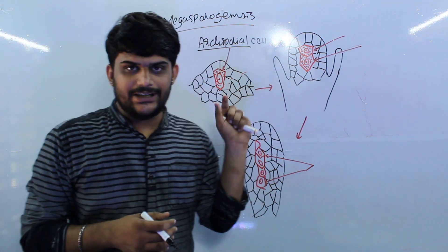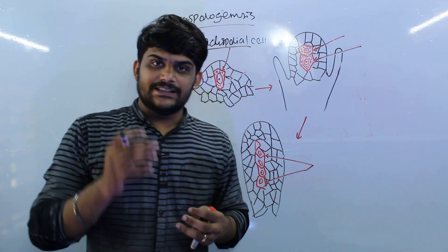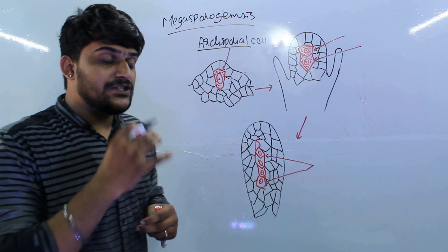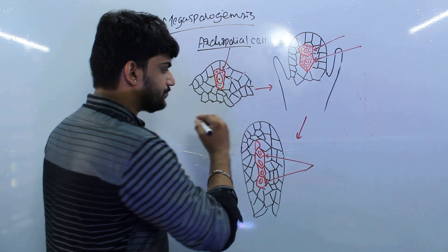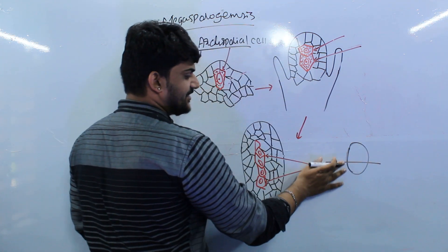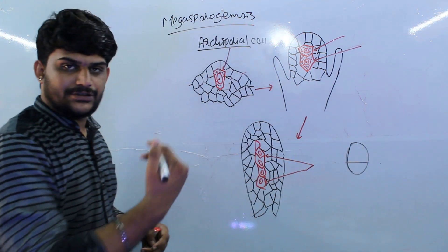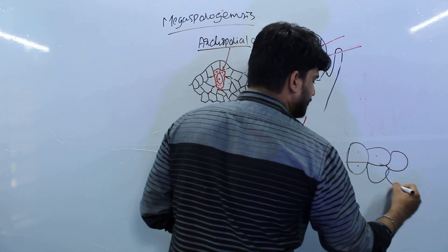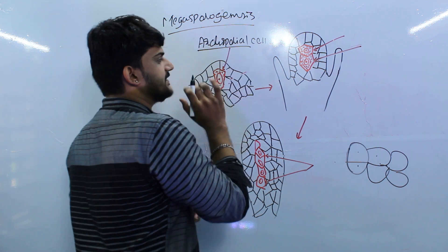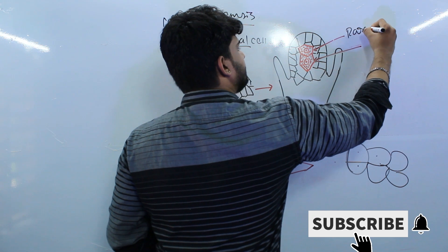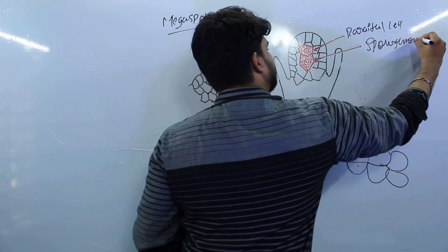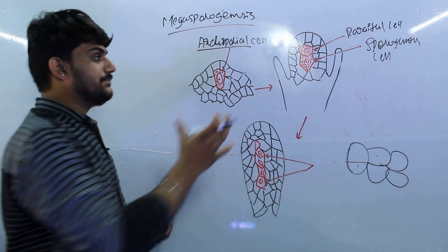Soon after its generation, the archesporeal cell directly goes into the division process. The process of division is periclinal division. Periclinal division is like a transverse section — a cell divides to make two rows of cells continuously. This gives us two cells from the single archesporeal cell: one is the upper parietal cell and the other is the lower sporogenous cell.